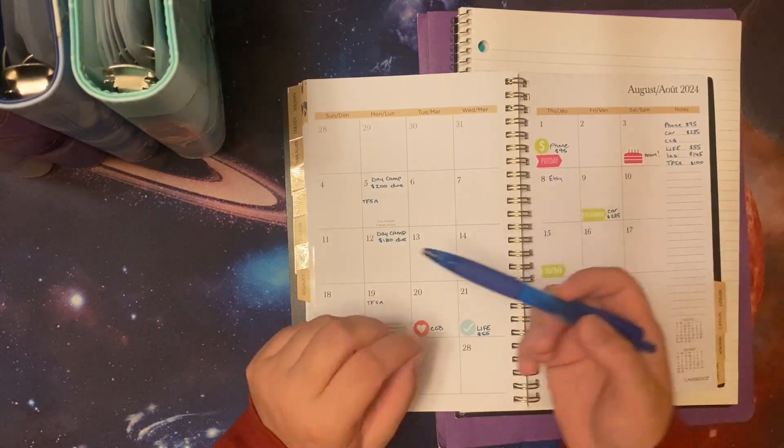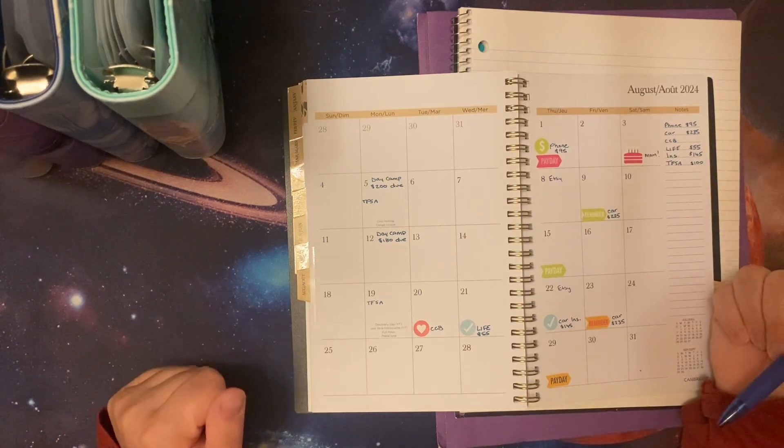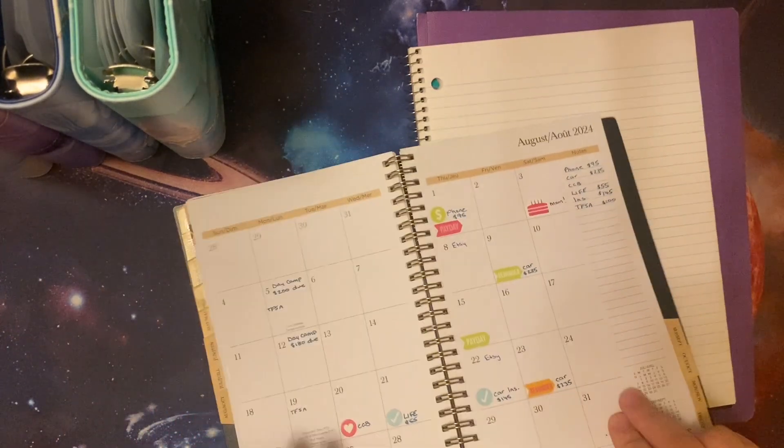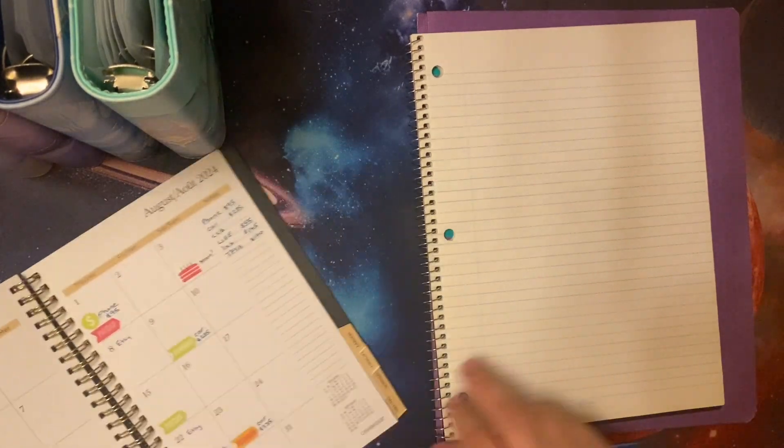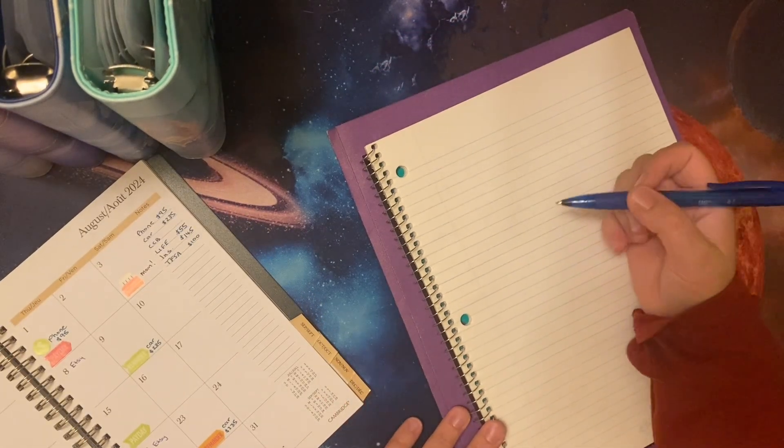So I called my Primerica rep and canceled my hundred dollars for my tax free savings account. I was like, I just can't do it this pay. Can we just skip this time and do it next time? And he's like, yep, that's fine. So I did that. Then I begged my mom. I'm like, we have three pays in August. Can I pay you in the next two? And she's like, yeah, that's fine. So basically I just begged everyone to give me a break and everyone was really nice and did.